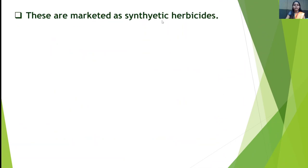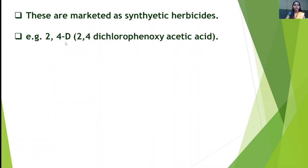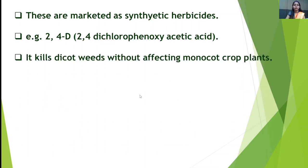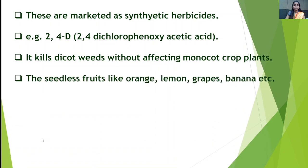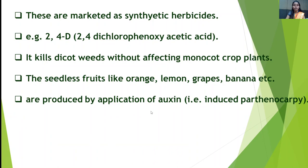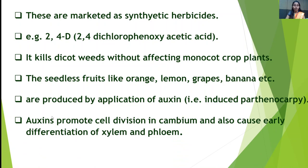Auxins are marketed as synthetic herbicides — for example, 2,4-dichlorophenoxyacetic acid (2,4-D), which kills dicot weeds without affecting monocot crop plants. Seedless fruits like oranges, lemons, grapes and bananas are produced by application of auxins — this is called induced parthenocarpy. Auxins also promote cell divisions in cambium and cause early differentiation of xylem and phloem.